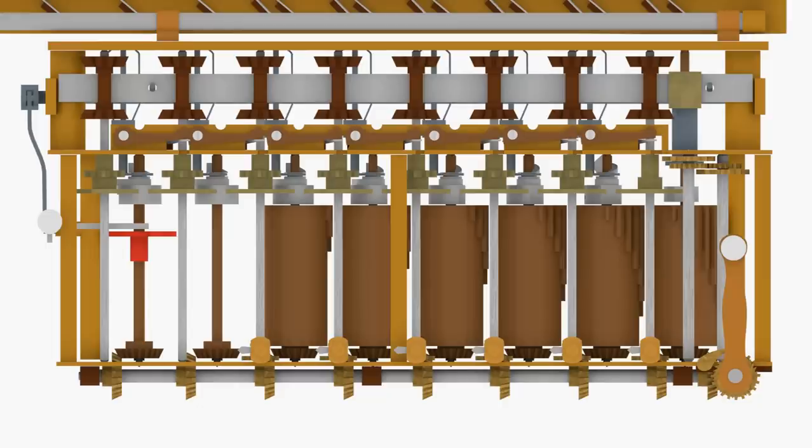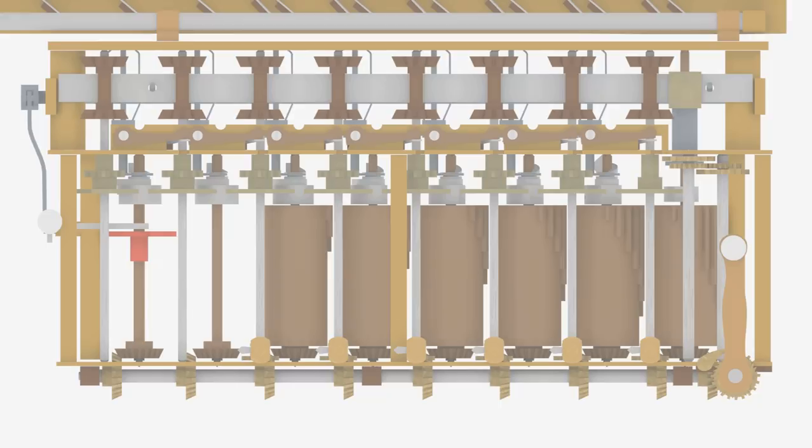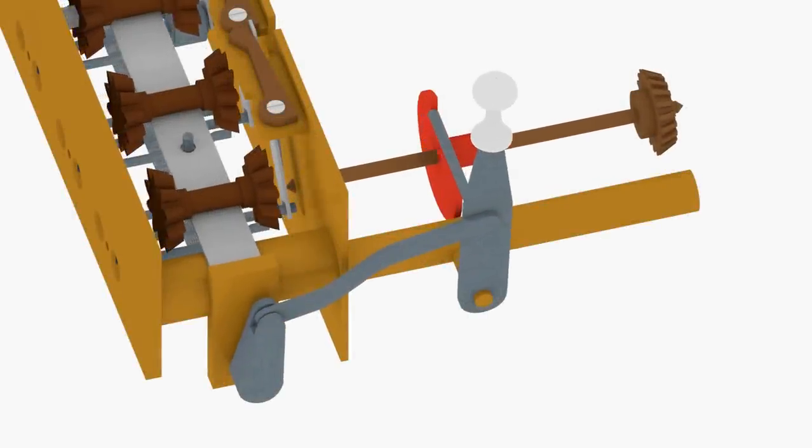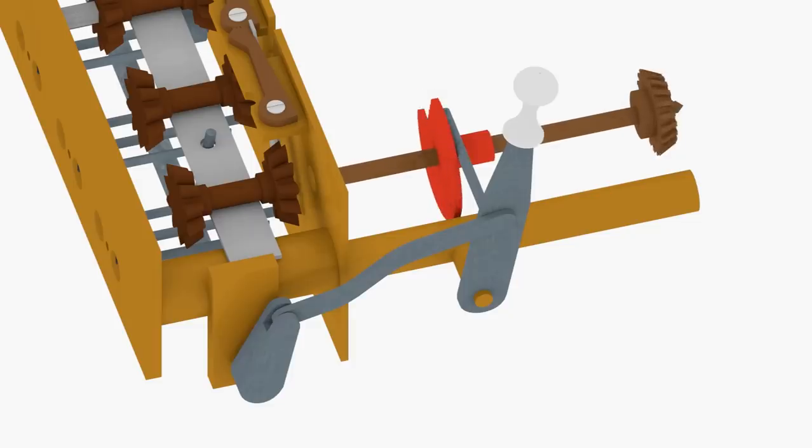An interlock disc prevents the operation control lever from being moved while the crank is turning. A rod protruding from the control lever can only pass through a slot in the disc when the crank is in its resting position.